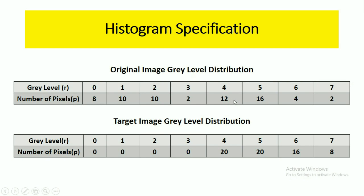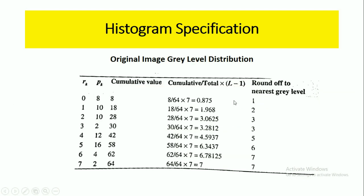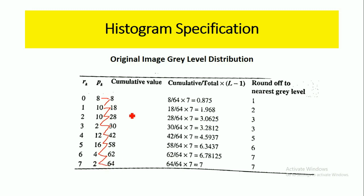After representing the gray level distribution, we will do histogram equalization for the individual images. We take the gray level values from 0 to 7, and the number of pixels having the corresponding gray levels are represented as PK. Gray level 0 contains 8 pixels, gray level 1 contains 10 pixels, and gray level 7 contains 2 pixels. Now we compute the cumulative values: 8, then 8 plus 10 equals 18, then 18 plus 10 equals 28, then 28 plus 2 equals 30, then 30 plus 12 equals 42, then 42 plus 16 equals 58, then 58 plus 4 equals 62, then 62 plus 2 equals 64.